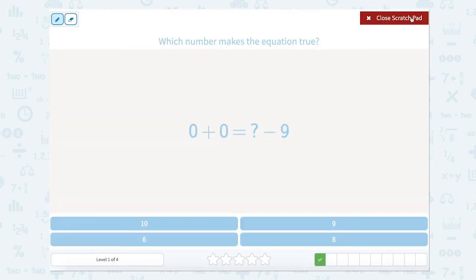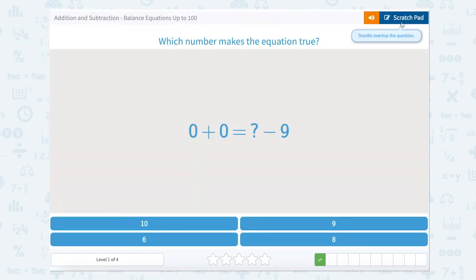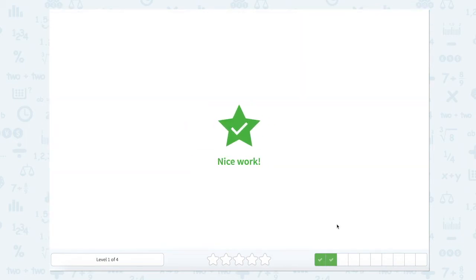Now let's look at the scratch pad. This side of the equal sign is 0 plus 0. We know that 0 equals something minus 9. So something minus 9 equals 0. What would that be? Well, 9 minus 9 equals 0. So let's close our scratch pad. There's 9. Nice work.